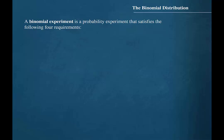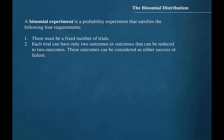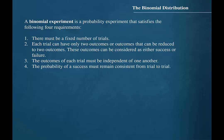A binomial experiment is a probability experiment that satisfies the following four requirements. There must be a fixed number of trials. Each trial can have only two outcomes, or outcomes that can be reduced to two outcomes, considered as either success or failure. The outcomes of each trial must be independent of one another. The probability of a success must remain consistent from trial to trial.